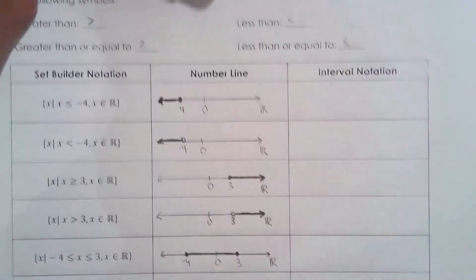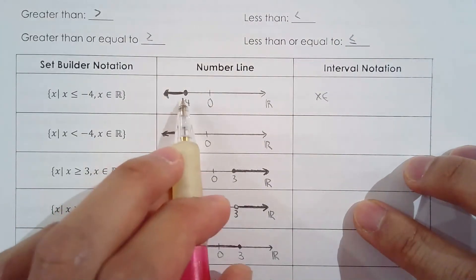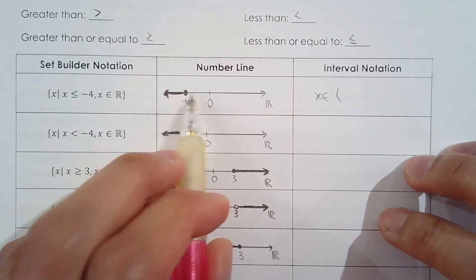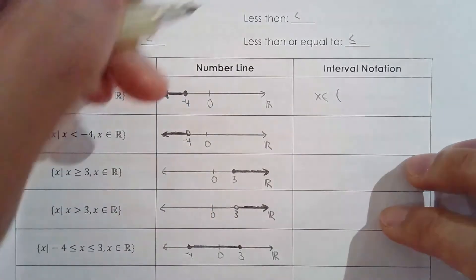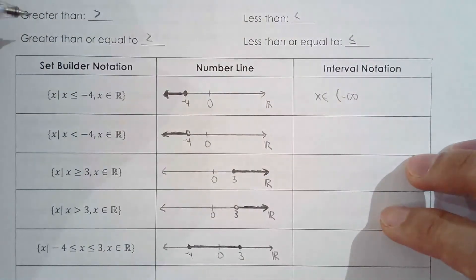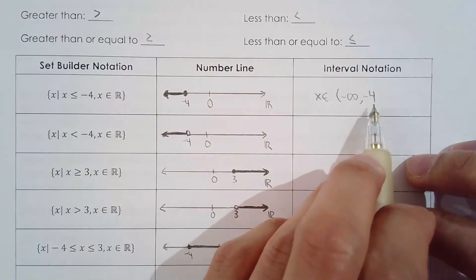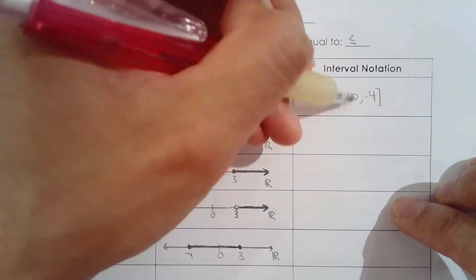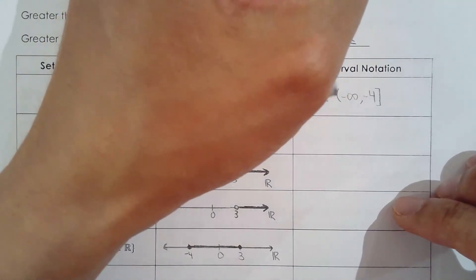Now what about interval notation — the most concise method. If x is less than or equal to negative 4, interval notation works by going from the smaller number to the bigger number, left to right on the number line. So the smaller value here is negative infinity. We want to include negative 4, so we use a square bracket there. Around infinity, you can't include it — it's unbounded — so we always use a round bracket around infinity or negative infinity.